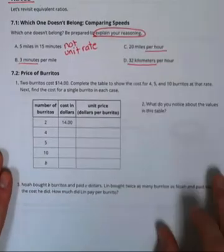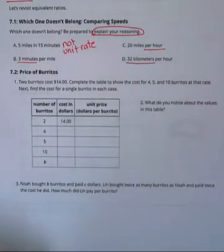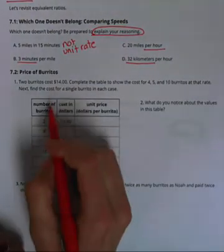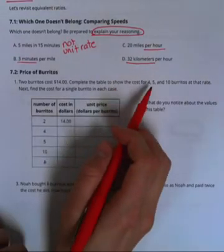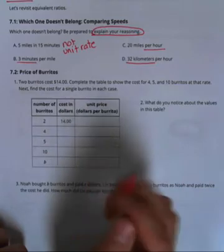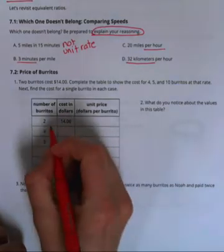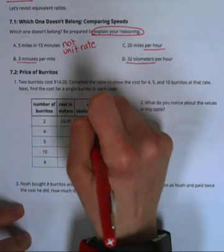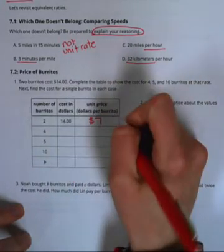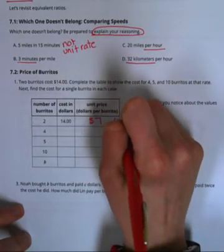Price of burritos. It says two burritos cost $14. We have a nice little table here that they set up. We're going to complete the table to show the cost of 4, 5, and 10 burritos. If we have two burritos for $14 that means that the unit price would be $7. We get that by doing 14 divided by 2.